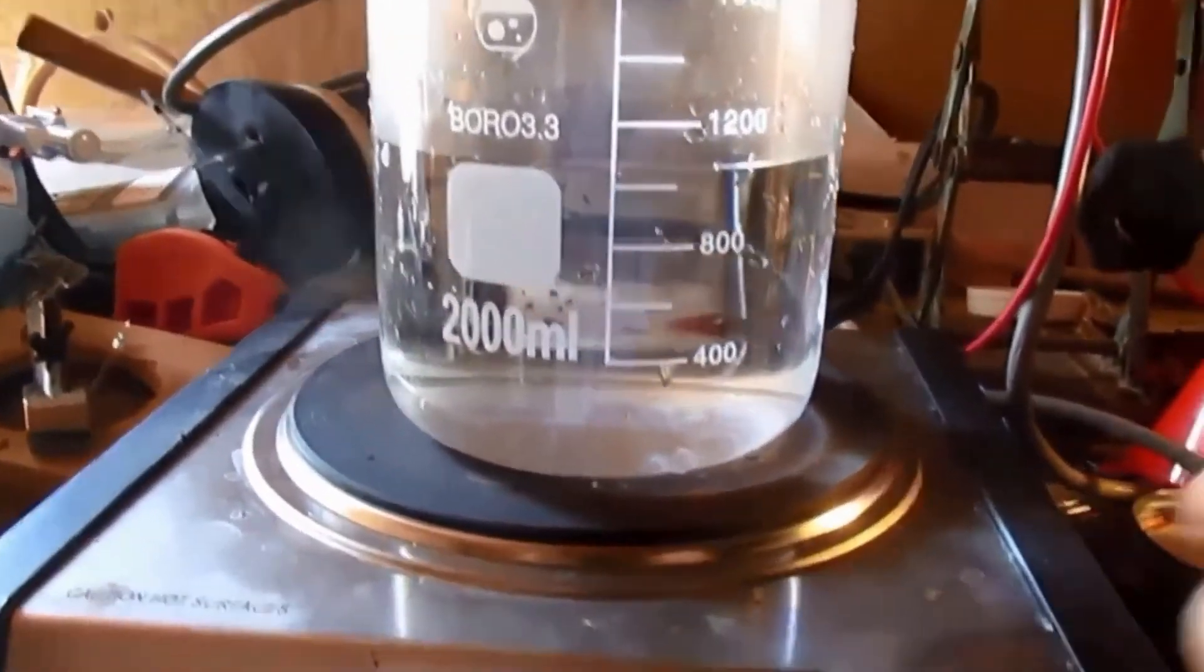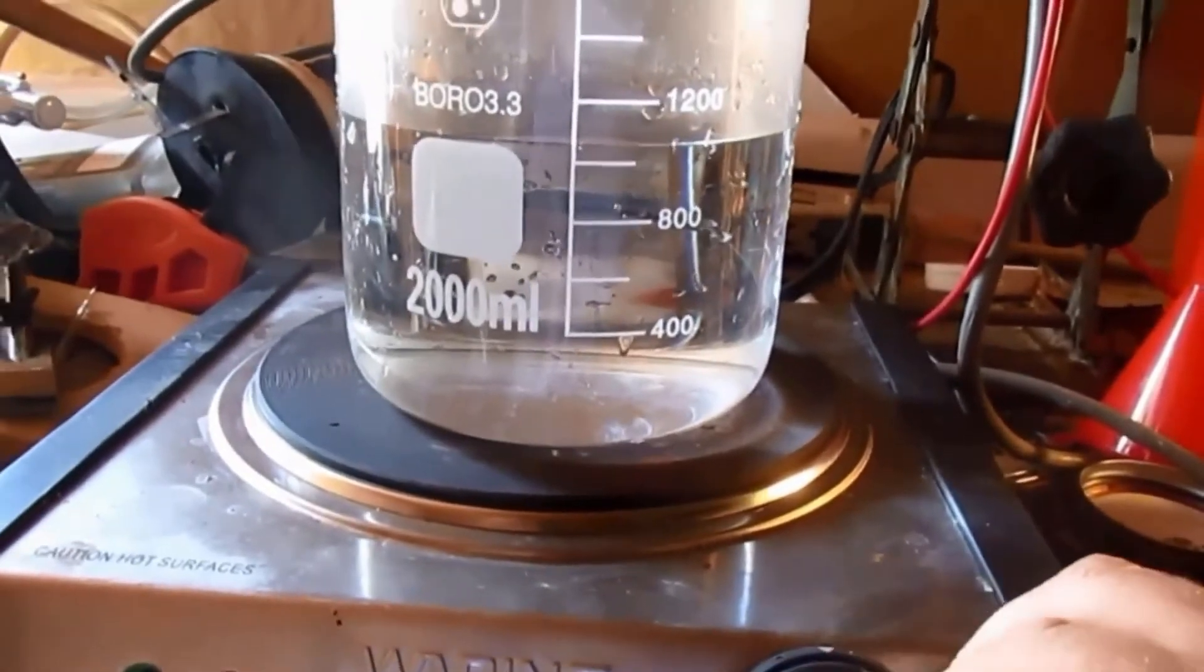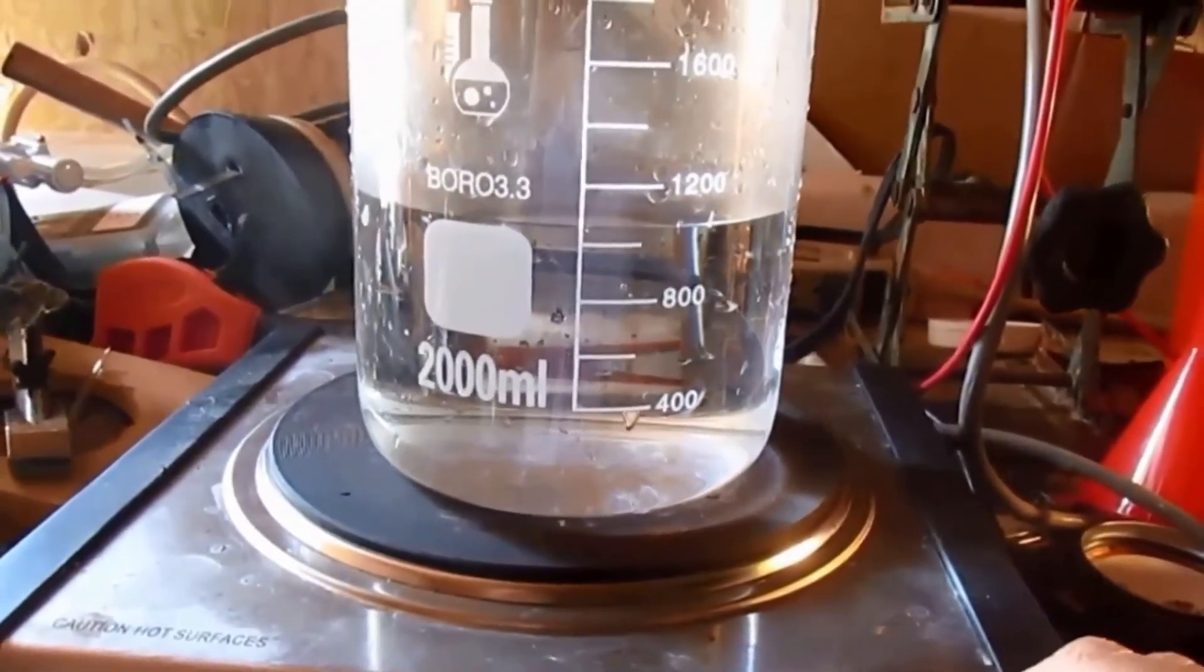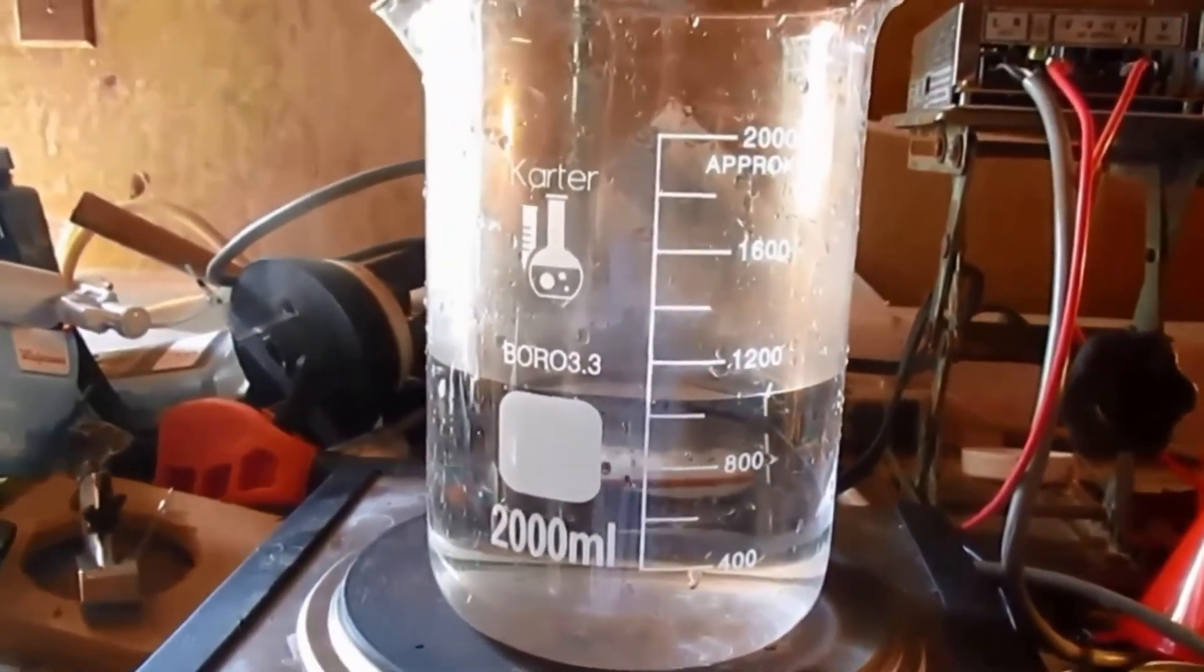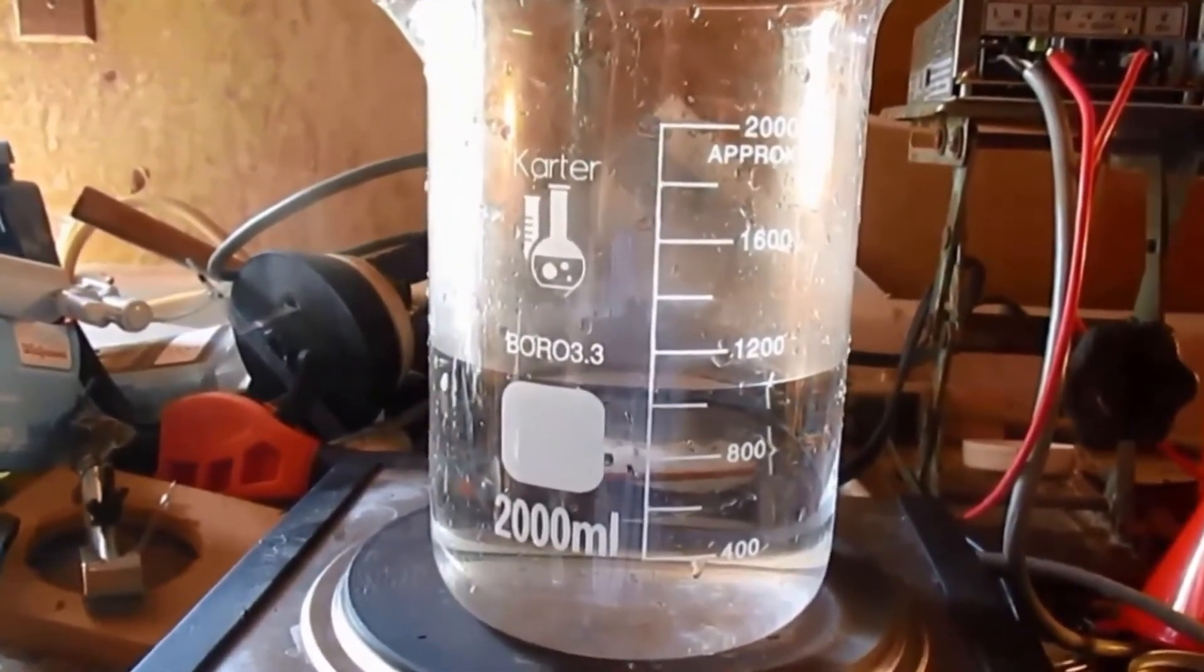Using a hot plate, bring the electrolyte to a boil. This will destroy any remaining sodium hypochlorite in solution. Although there are small amounts, it's still necessary to do.